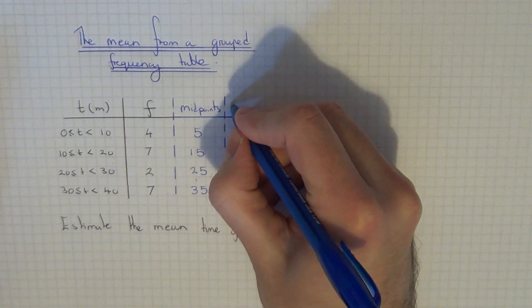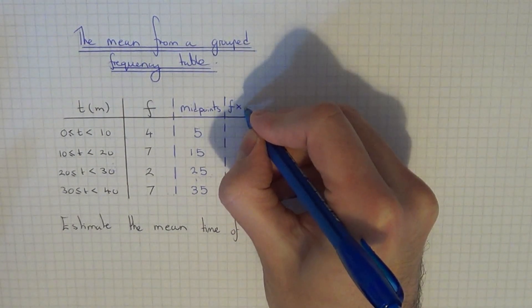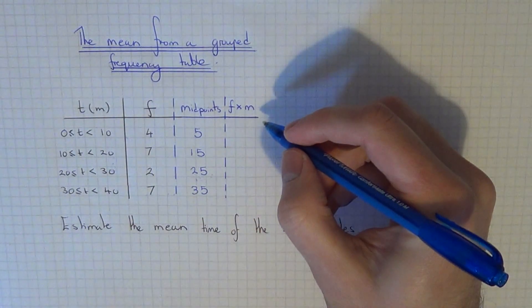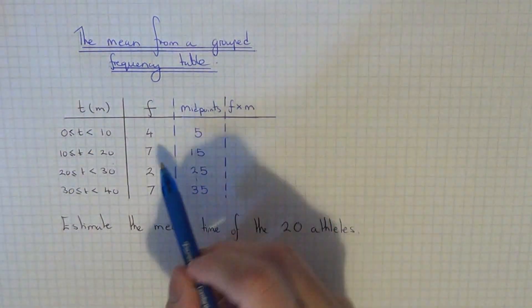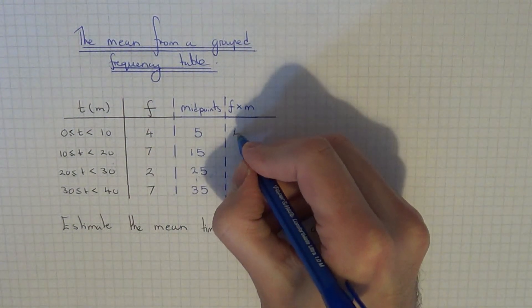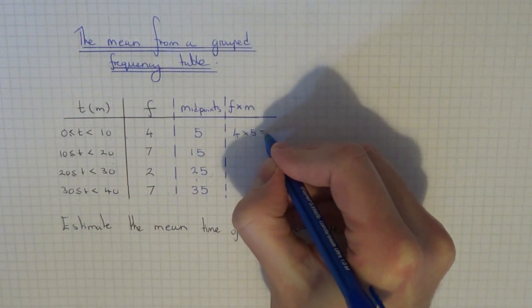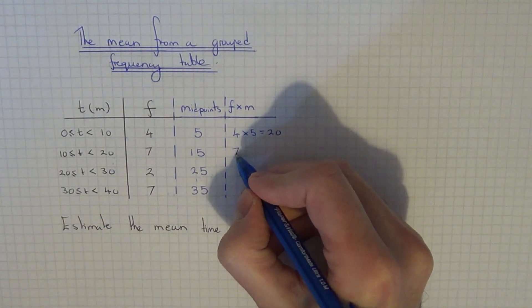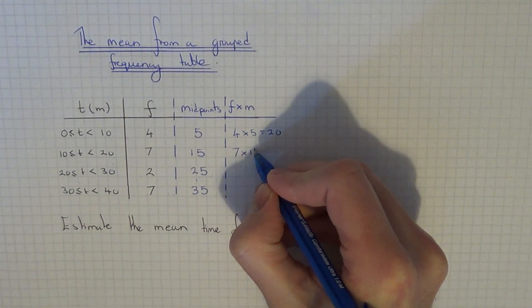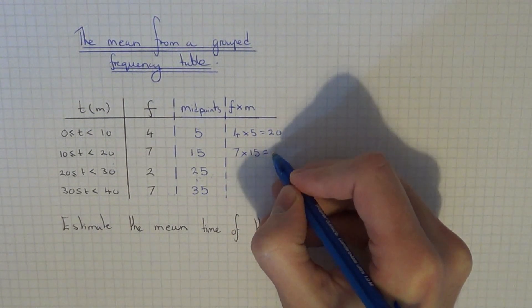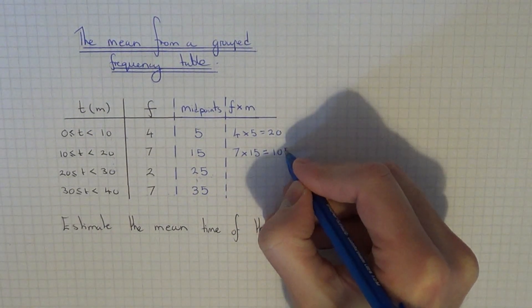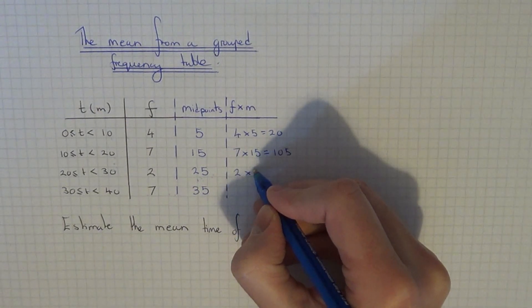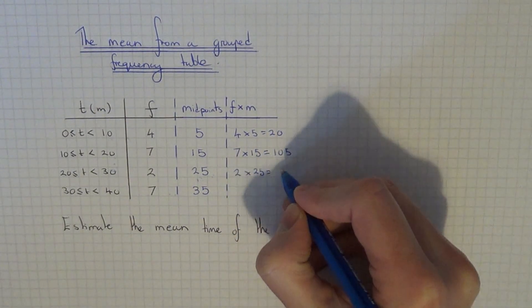So if I just call this frequency times by your midpoints. If we do 4 times 5, that's 20. Next do 7 multiplied by 15, this gives us 105. And next we'll do 2 times 25, which is 50.